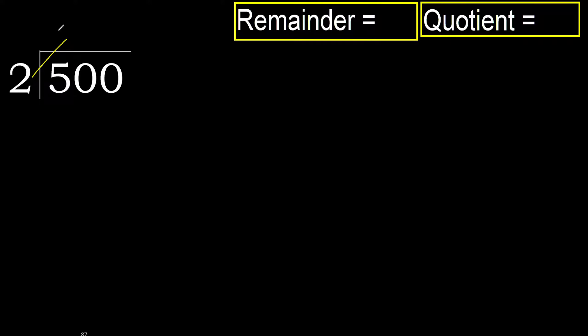2 multiplied by 3 is 6. 6 is greater. 4 is not greater.